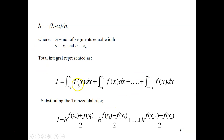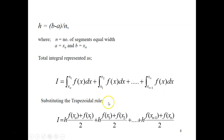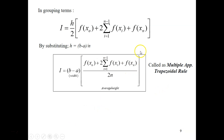Let's look at the equation for the multiple application trapezoidal rule and how they arrive at it. The step size equals b minus a divided by the number of segments n, where n is the number of equal-width segments. The total integral formula becomes: b minus a times f(x0) plus 2 times the summation of all intermediate f(x) values plus f(xn), all divided by 2n. That is the formula.